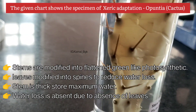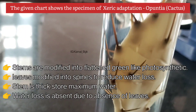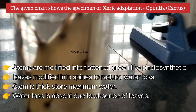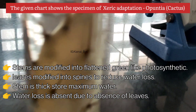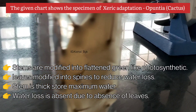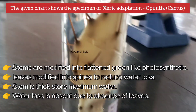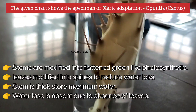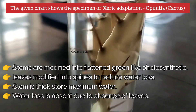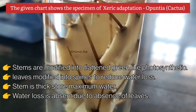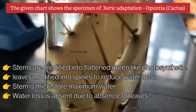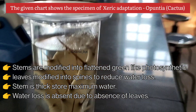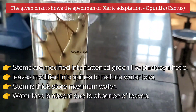The given chart shows the specimen of xeric adaptation, i.e., Opuntia, commonly called as cactus. Stems are modified into flattened green photosynthetic structures. Leaves are modified into spines, which reduce water loss. Stem is thick and stores maximum water, carrying out the photosynthesis process.